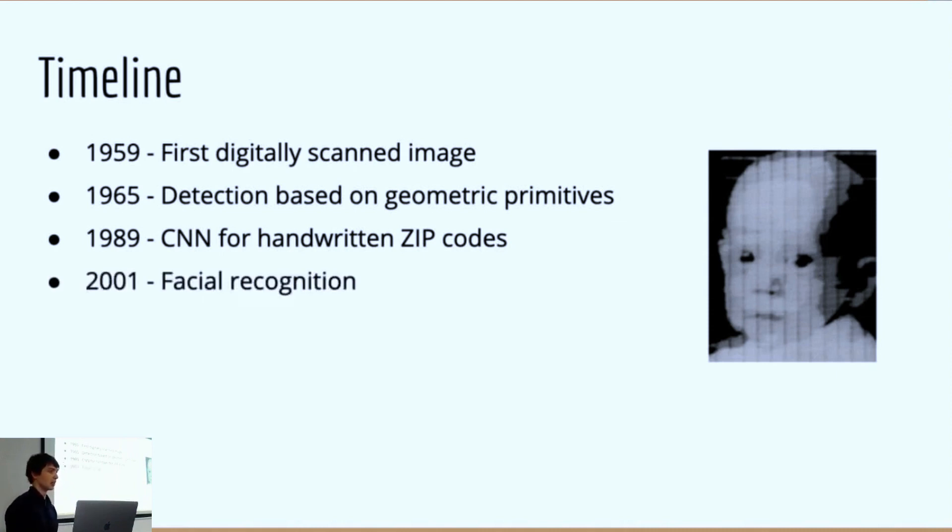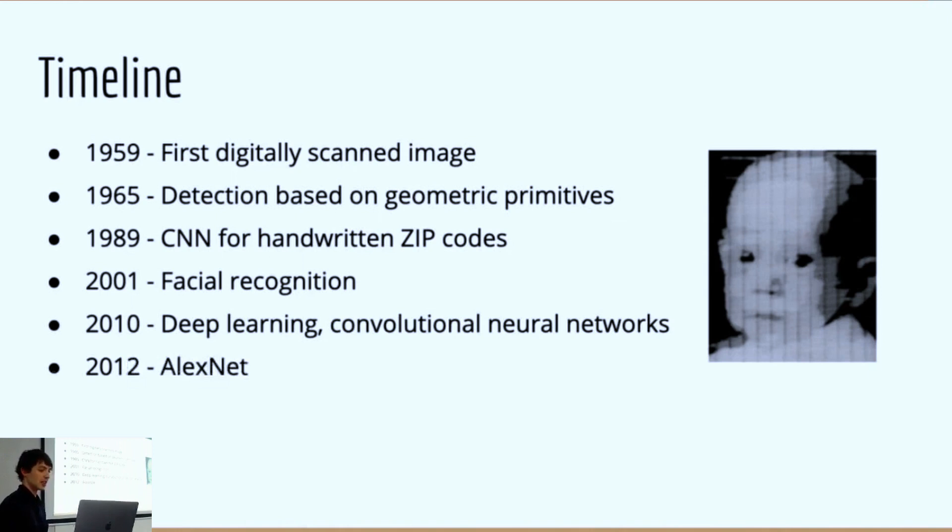In 2001 facial recognition became much better and we're starting to see that everywhere at the moment. Then in 2010 we started to see a lot more deep learning and convolutional neural network applications to identify things within images. In 2012 there was a massive breakthrough with AlexNet, which is quite a famous convolutional neural network. It managed to increase its accuracy by 9% over the year before. After that a lot of research and a lot of money was poured into using these convolutional neural networks to identify images.